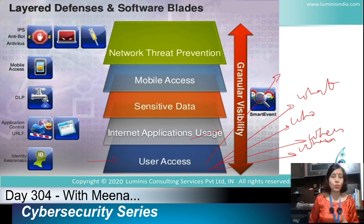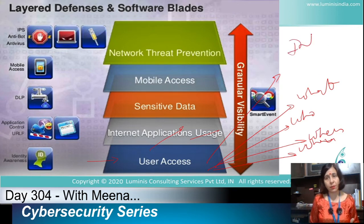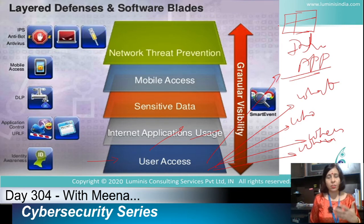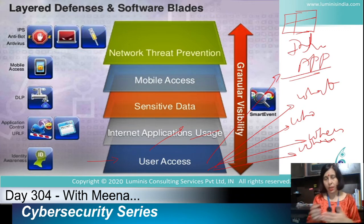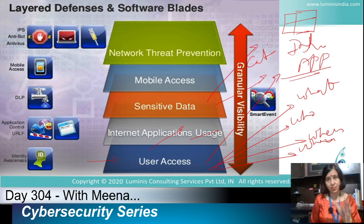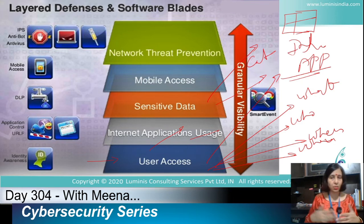We can control which user has access to which application, and to which part of that application. For in-house applications, HR can have access to a certain part while the sales department has access to a different part. We can provide application access based on user identity. We can also differentiate data sensitivity, categorize all our data, and assign rights — whether users can read, write, or only view the data.